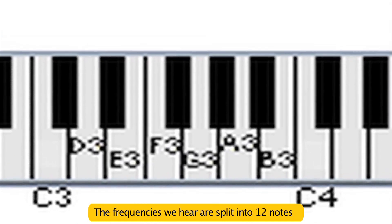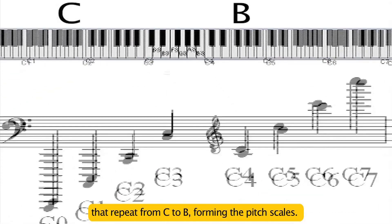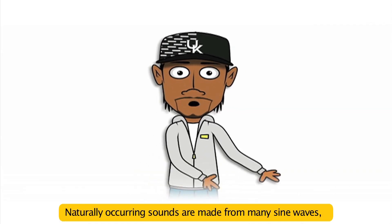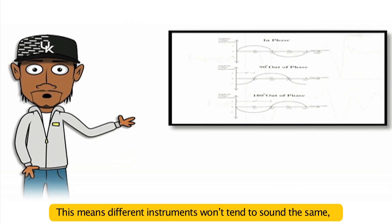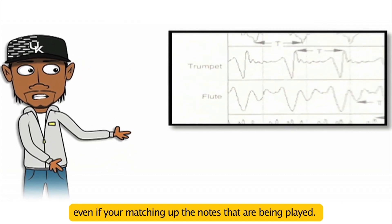The frequencies we hear are split into twelve notes that repeat from C to B, forming the pitched scales. Naturally occurring sounds are made from many sine waves, each with a different frequency, amplitude, and phase. This means different instruments won't tend to sound the same, even if you're matching up the notes that are being played.